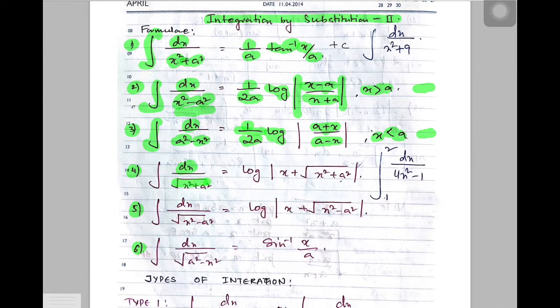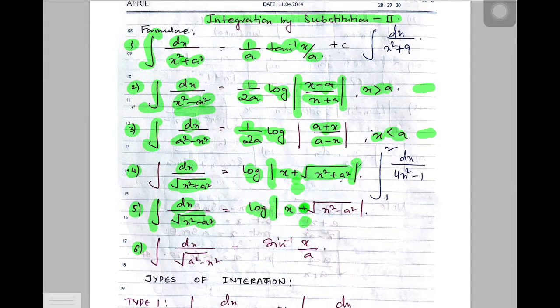The fourth one has roots — the same formulas but with roots. All three formulas with roots. Root of x squared plus a squared gives log of x plus under root x squared plus a squared in modulus. Number five, dx over under root x squared minus a squared gives log of x plus under root x squared minus a squared — notice there is a plus in both cases, and under the square root there is a minus. Every formula must have plus c. And finally, integration dx divided by under root a squared minus x squared equals sine inverse x by a.